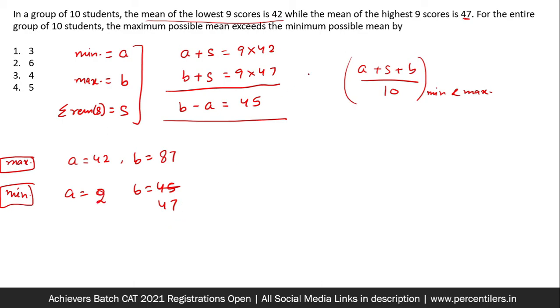Okay, so how can I find the mean that would be equal to A plus S, we already know 9 into 42, now plus B divided by 10. And here the mean would be 9 into 42, that is a constant we cannot change it. And this would be 47.